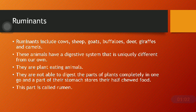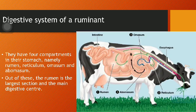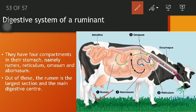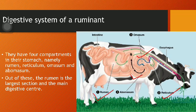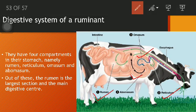Let us understand the digestive system of a ruminant. Ruminants have four compartments in their stomach, namely: rumen, reticulum, omasum, and abomasum. Out of these, the rumen is the largest section and the main digestive center, as you can see in the diagram.